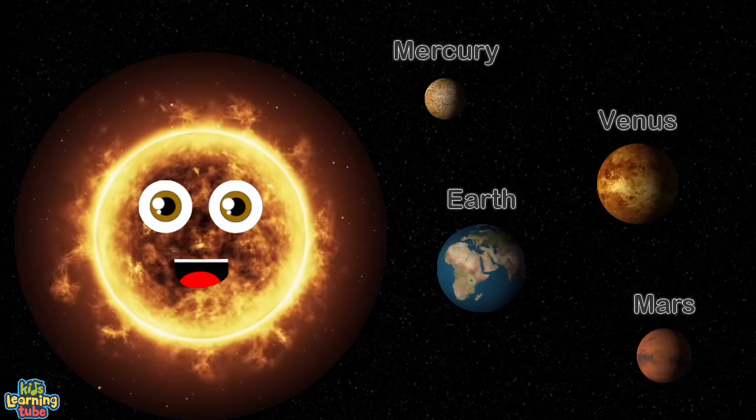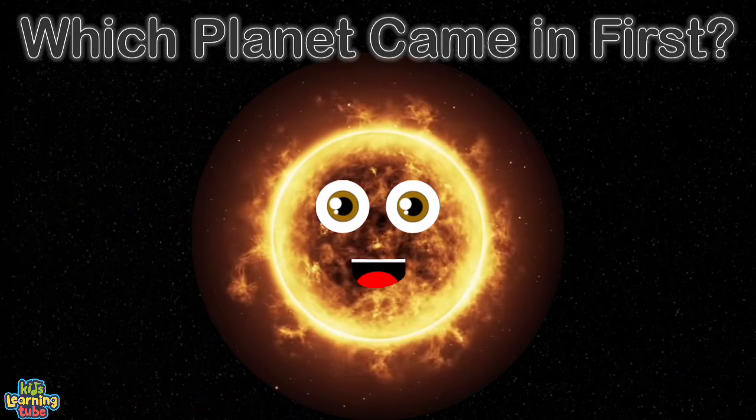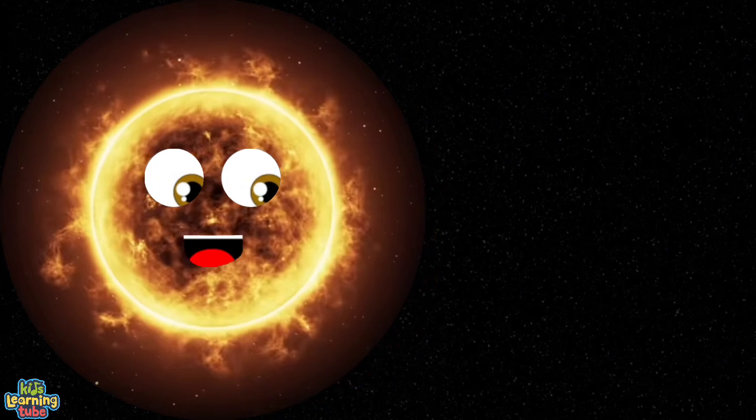You eventually became planets but it wasn't fast. To set the record straight, you all became planets last. Let me tell all of you planets who really came in first. Listen to how astronomers placed each planet from birth. Does that set you straight Mercury?